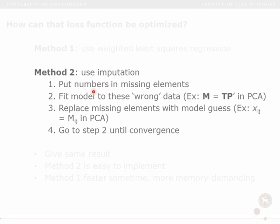The way we do imputation is that we start out by just plugging in numbers where we have missing elements. We can use suitable numbers or even random numbers, but we just plug in some numbers. When we do that, we don't have missing elements anymore. When we don't have missing elements, we can fit a model to the dataset using our normal algorithm.